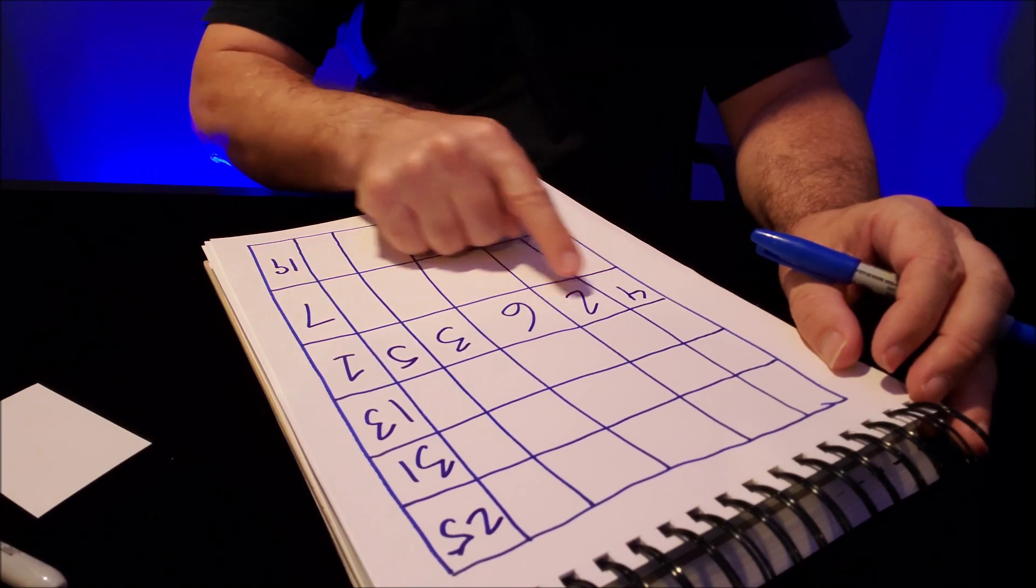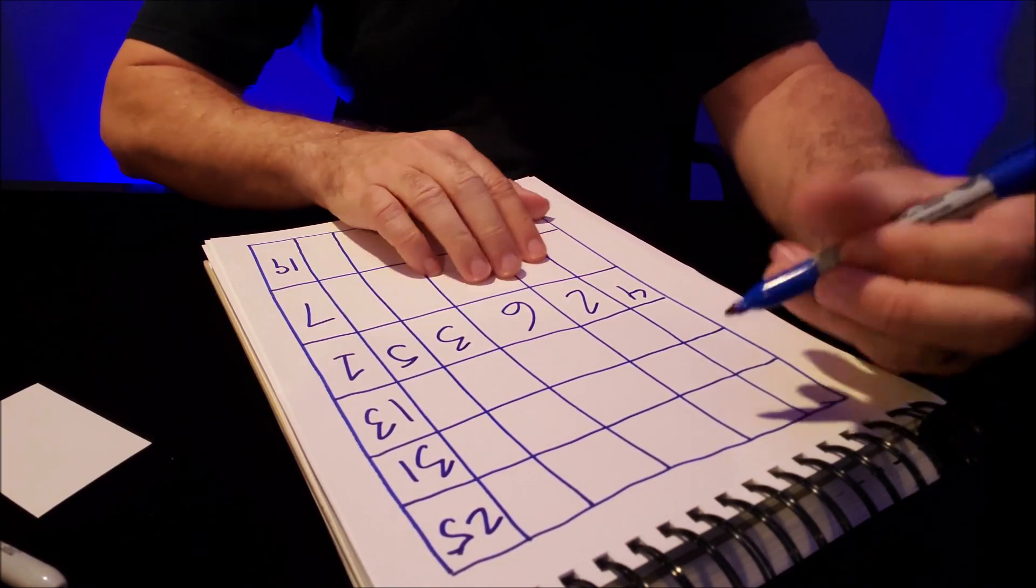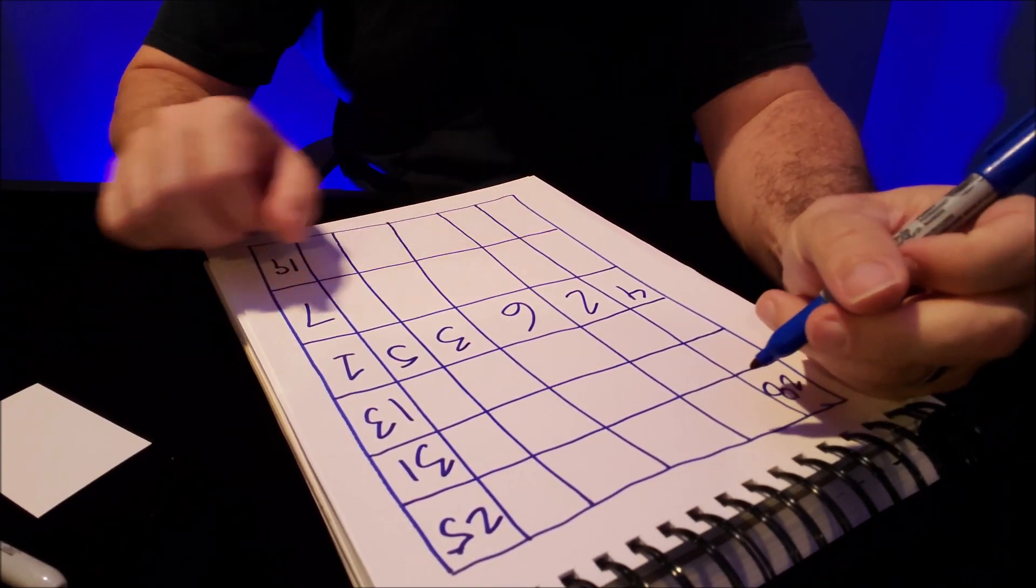So you're going to do that same pattern: one, two, three, four, five, six for each line. I'm going to fill these in real quick at hyperspeed.